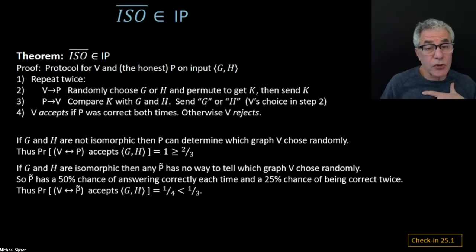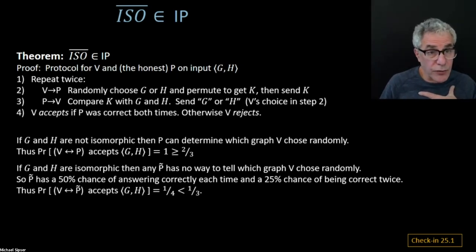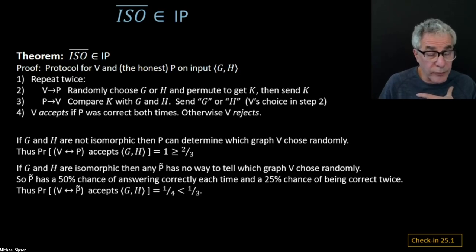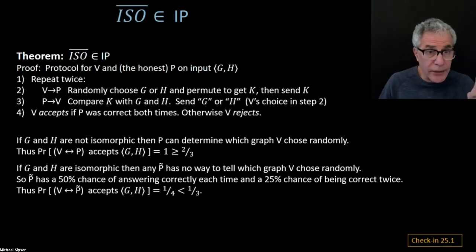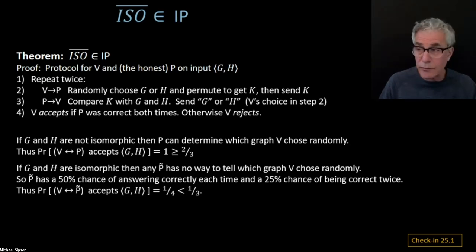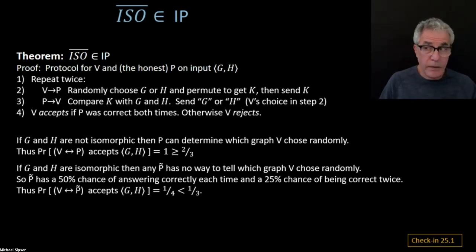Someone's asking: does the crooked prover answer just randomly, or can the crooked prover have a strategy? The crooked prover can have a strategy. We're assuming the crooked prover is devious, but it's still going to fail.